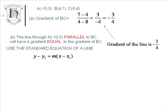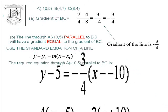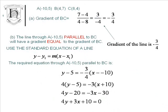So the gradient is minus 3 quarters from the information given, and point A is (-10, 5), so Y take away 5 is equal to minus 3 quarters times X take away minus 10. Tidying this up, expanding the brackets, multiplying through by 4, we get the equation of the line which we were required, QED.